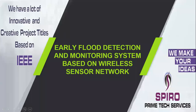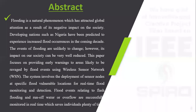ITWI 07 project code. Project title: Early Flood Detection and Monitoring System Based on Wireless Sensor Network. The aim of this project is to develop a flood monitoring system.